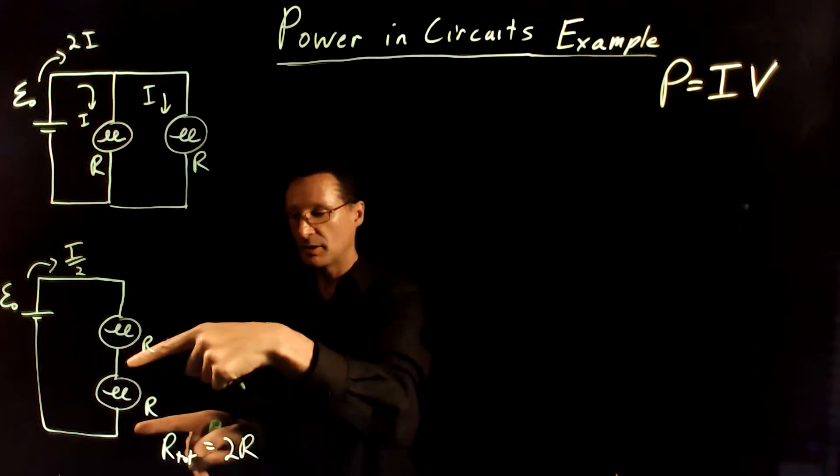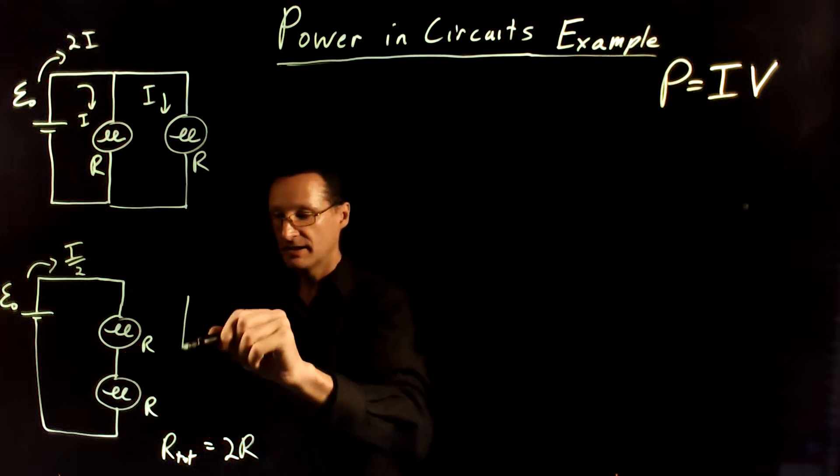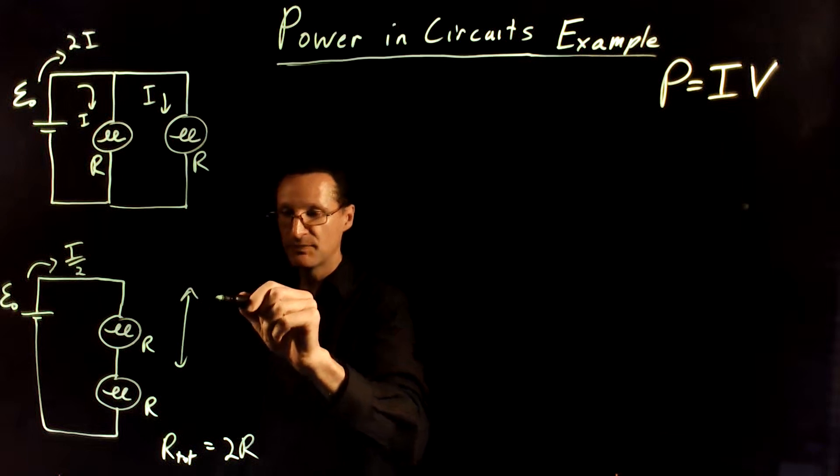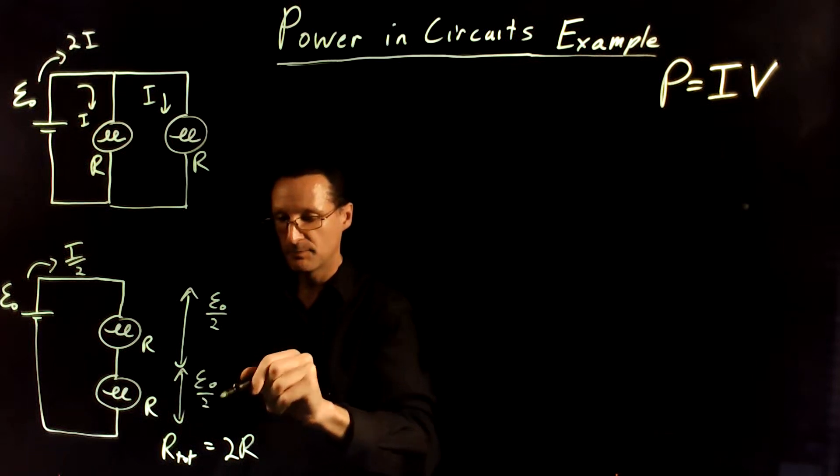and the second half of the voltage is going to drop across the second light bulb. So, this is going to have a voltage drop across, that's half the battery, and then the other half drops across this one.